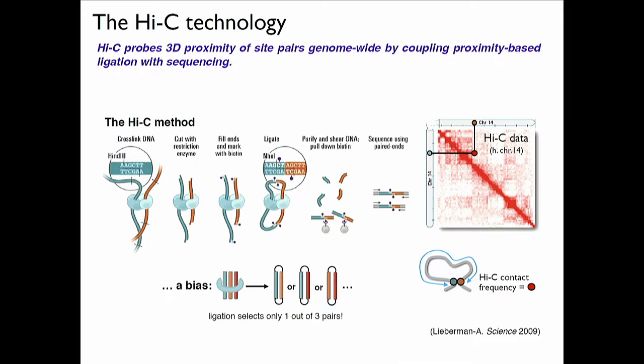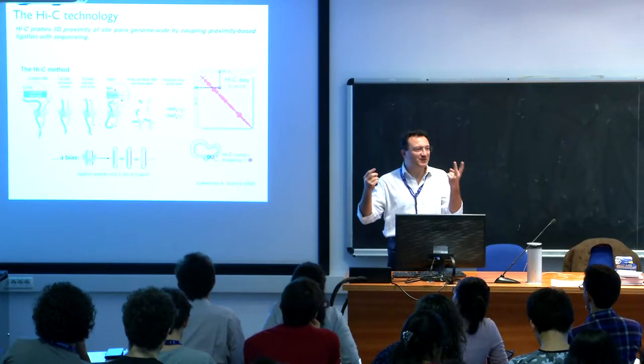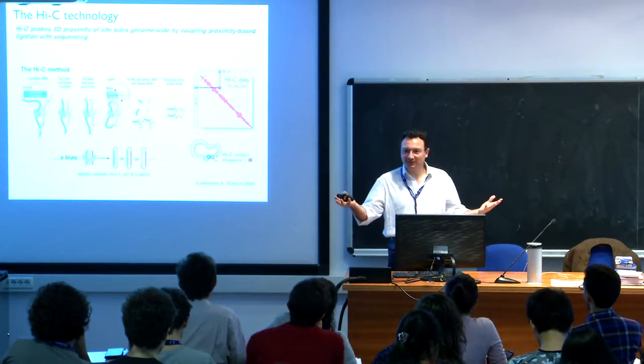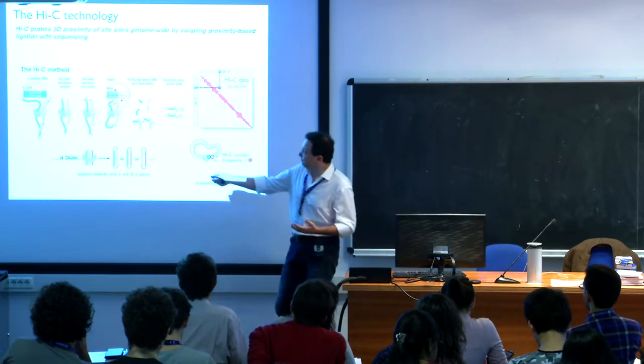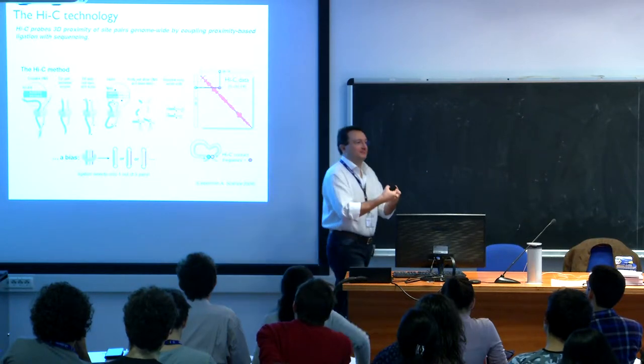In the Hi-C method, suppose you have two sites — the blue and the orange — which are in contact in some way; something holds them together. By using a special restriction enzyme, you can cut your genome in pieces, in fragments. Those enzymes cut at specific positions genome-wide. After the action of those enzymes, the genome is cut in pieces. You have two types of pieces: single fragments not interacting with anybody else, and pairs held together by the fact that they were in contact originally.